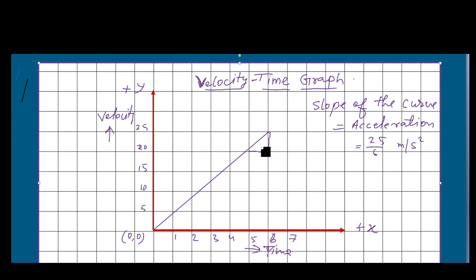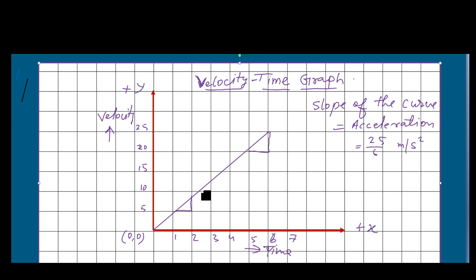We can calculate the slope of the curve at any point along the line, and since it is a straight line the slope will be the same everywhere. That means the acceleration is constant. The second most important information which the velocity-time graph gives is the distance traveled.